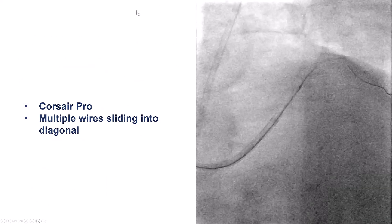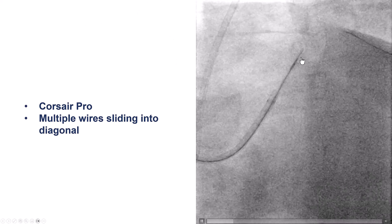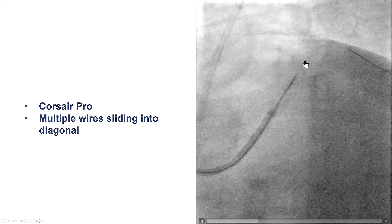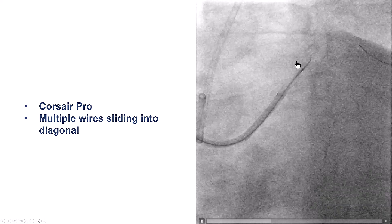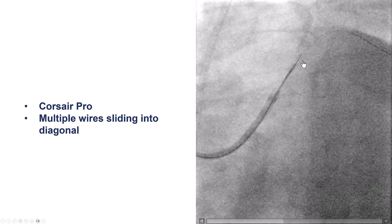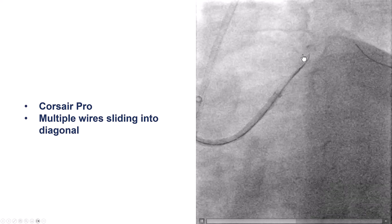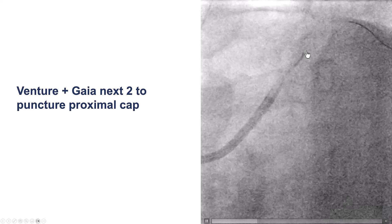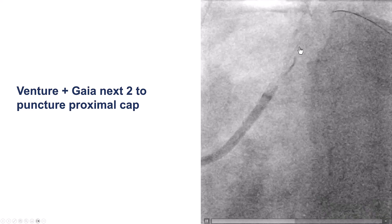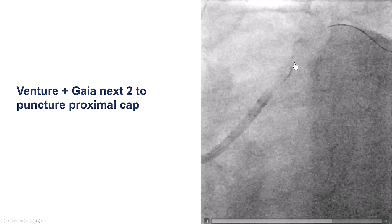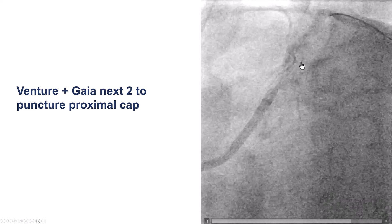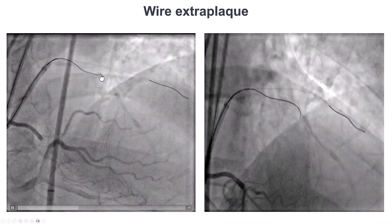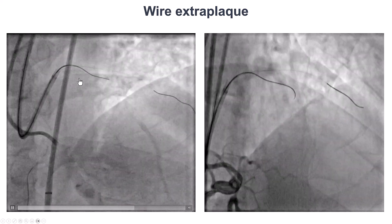We tried antegrade wiring using a standard Corsair microcatheter. The issue was that all the wires wanted to slide into the diagonal branch. To achieve more angulation directing the guidewire into the proximal cap, we used the Venture microcatheter, which is angulated and provides very strong support, along with the Gaia Next guidewire. After doing that, we were able to advance the wire along the course of the LAD.